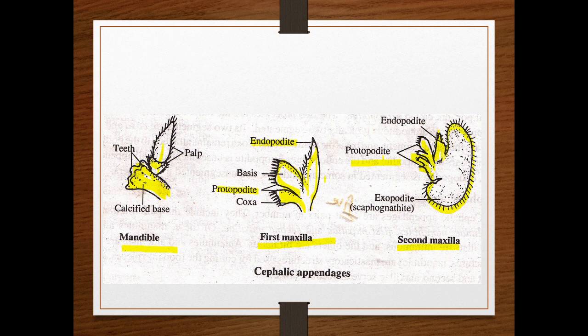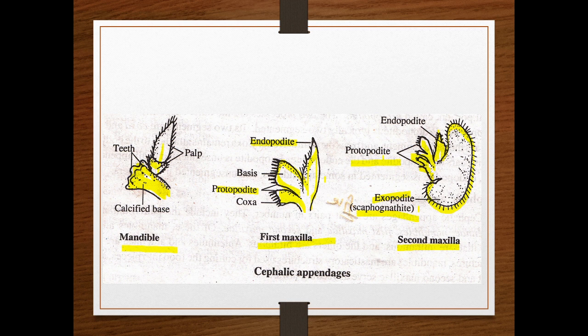The second maxilla has a scaphognathite. The endopodite is multi-segmented. The exopodite forms the scaphognathite, which helps in creating a constant water current.